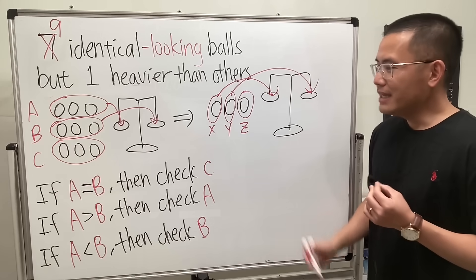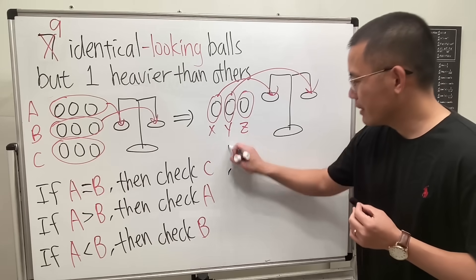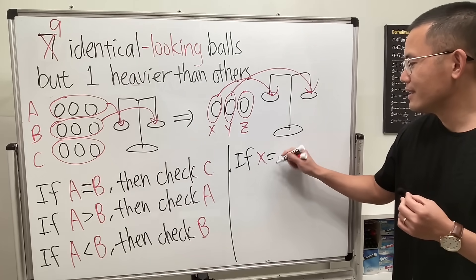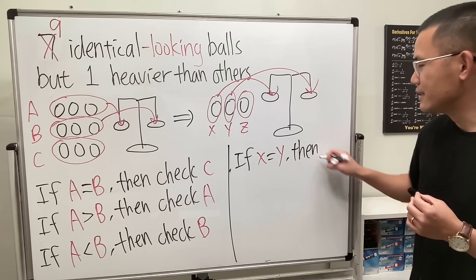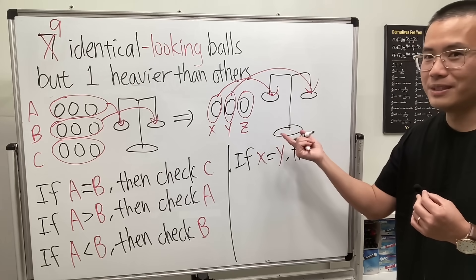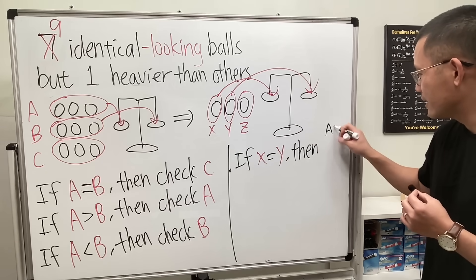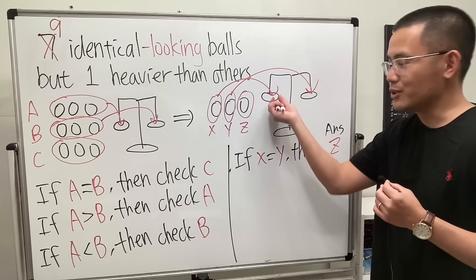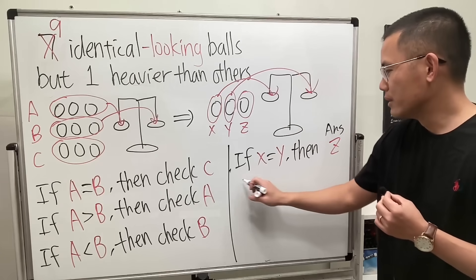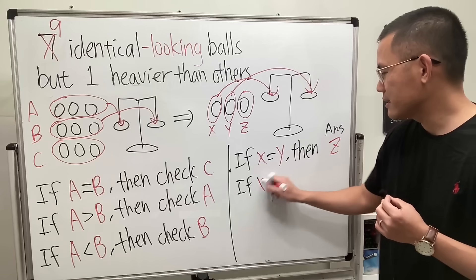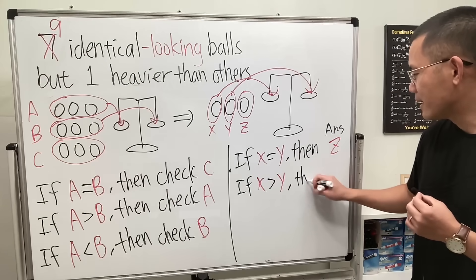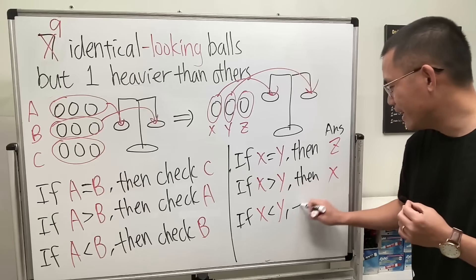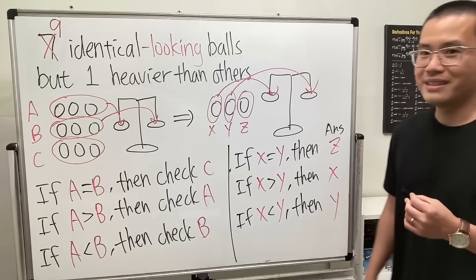Here's the deal: if x and y are equal, then the answer is z - this one has to be the heaviest. If x is heavier, then it's going to show right here. That means these two must be equal because we only have one heavier ball. So if x is greater than y, the answer is x. Likewise, if x is less than y, the answer will be y. That's it.